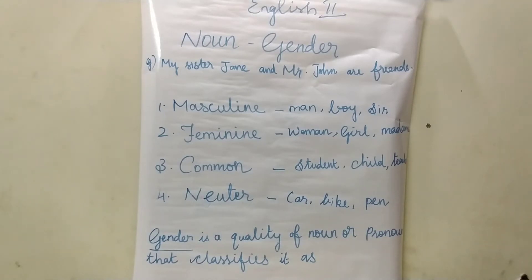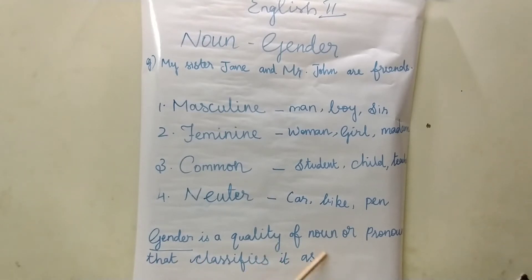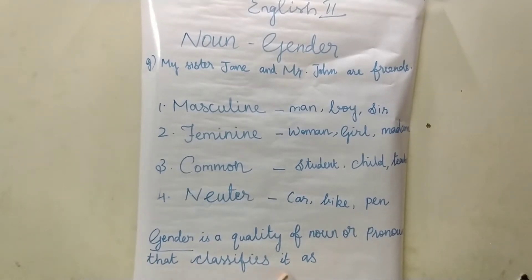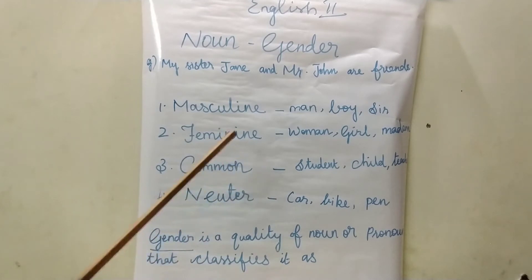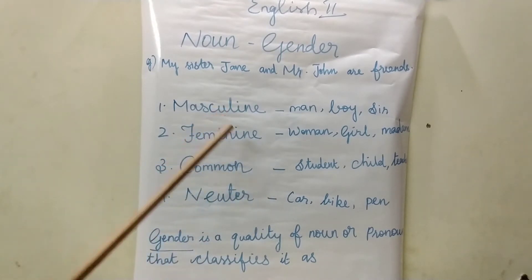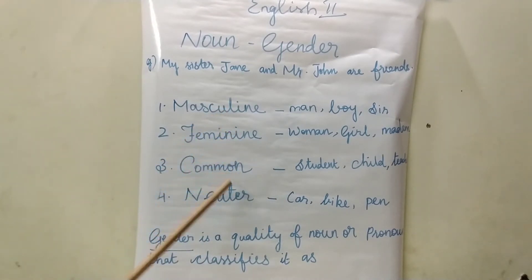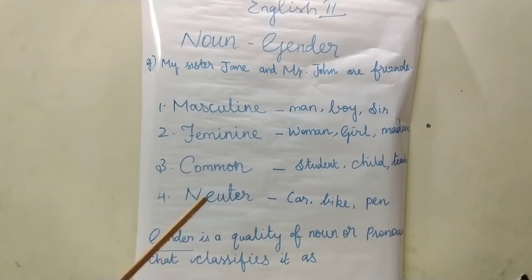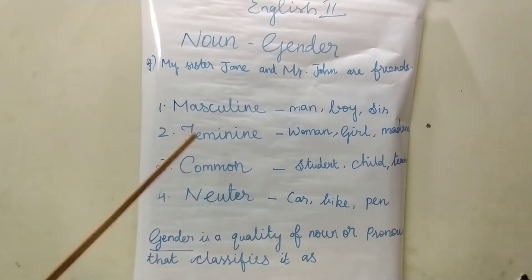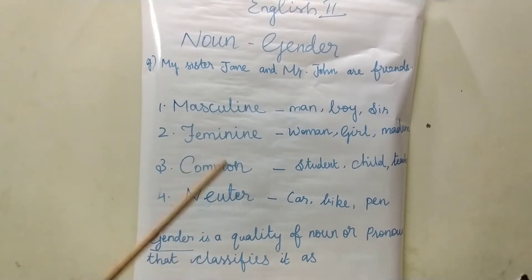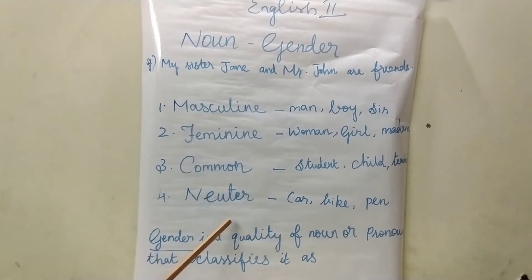So, gender is the quality of a noun or pronoun that classifies it as masculine, feminine, common, or neuter. What are the four types of gender? Masculine, feminine, common, and neuter.